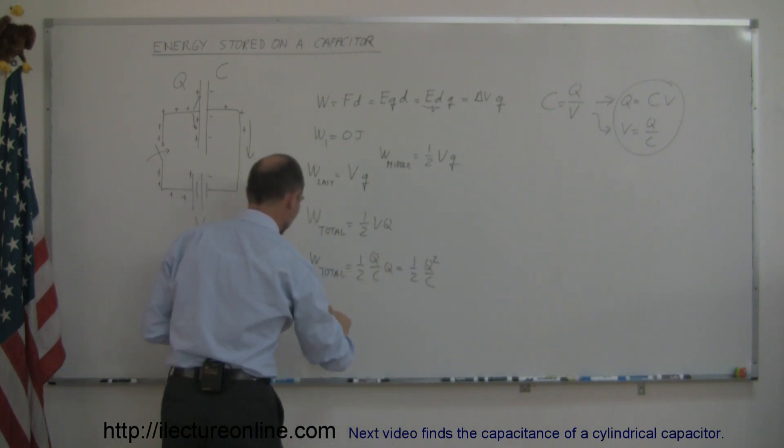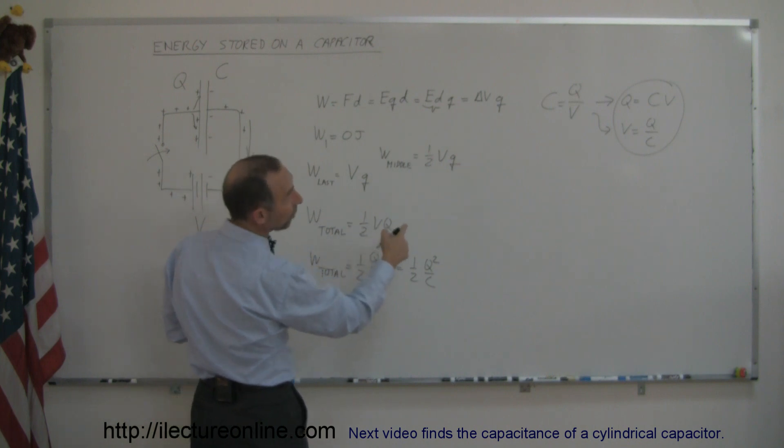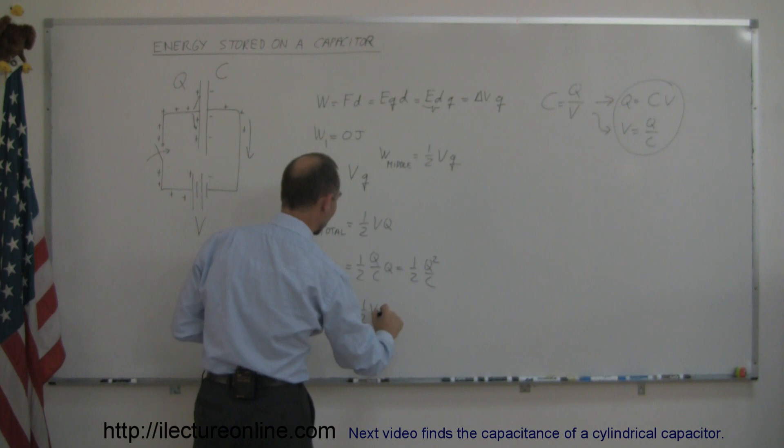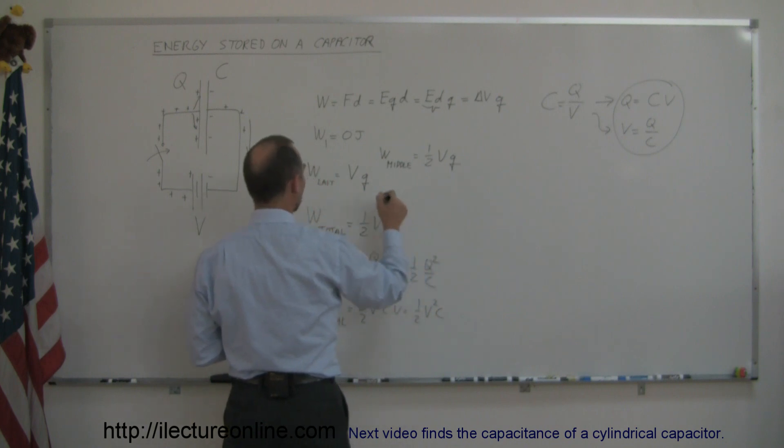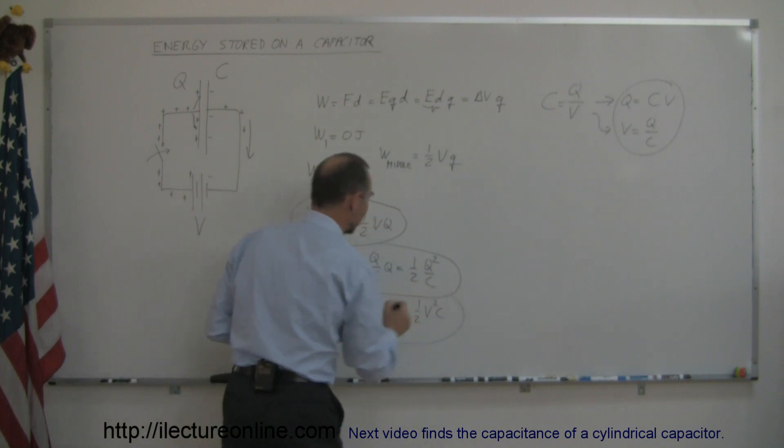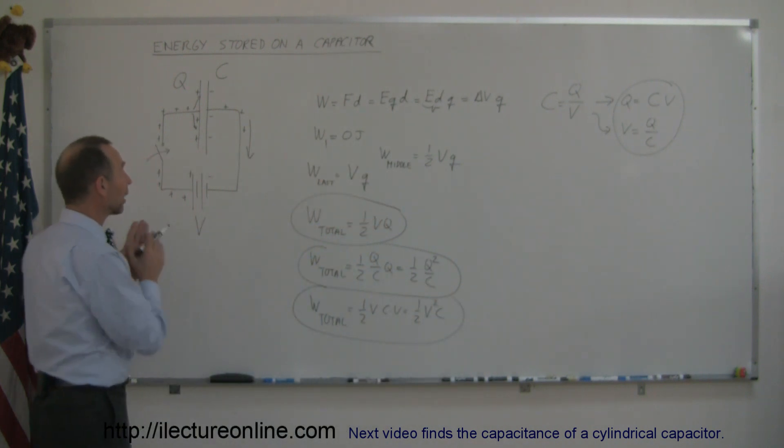Or, I can say that the work total is equal to, and I can take the original equation and replace Q by C times V. So, that would be one half V times C times V, or one half V squared C. So, these are the three ways in which you can calculate or describe the total work done or the total energy stored on a capacitor when it's filled with charge. And then, of course, if they tell you, for example,